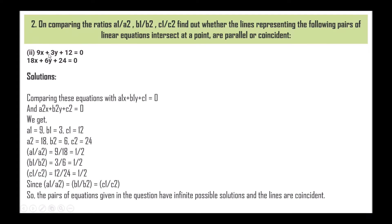Next: 9x + 3y + 12 = 0 and 18x + 6y + 24 = 0. Comparing the equations, we get a1 = 9, b1 = 3, c1 = 12, a2 = 18, b2 = 6, c2 = 24. So a1/a2 = 9/18 = 1/2, b1/b2 = 3/6 = 1/2, and c1/c2 = 12/24 = 1/2. Since a1/a2 = b1/b2 = c1/c2, the pairs of equations have infinite possible solutions and the lines are coincident.